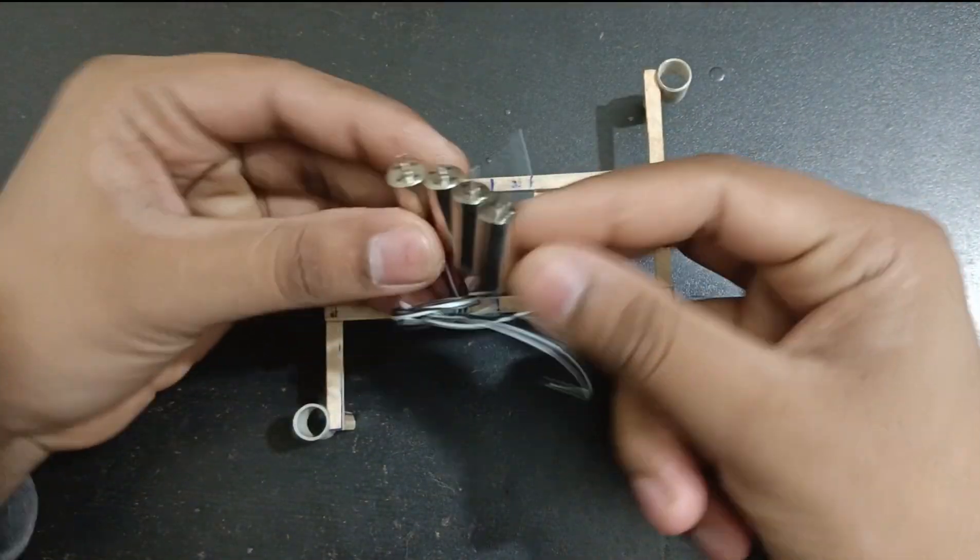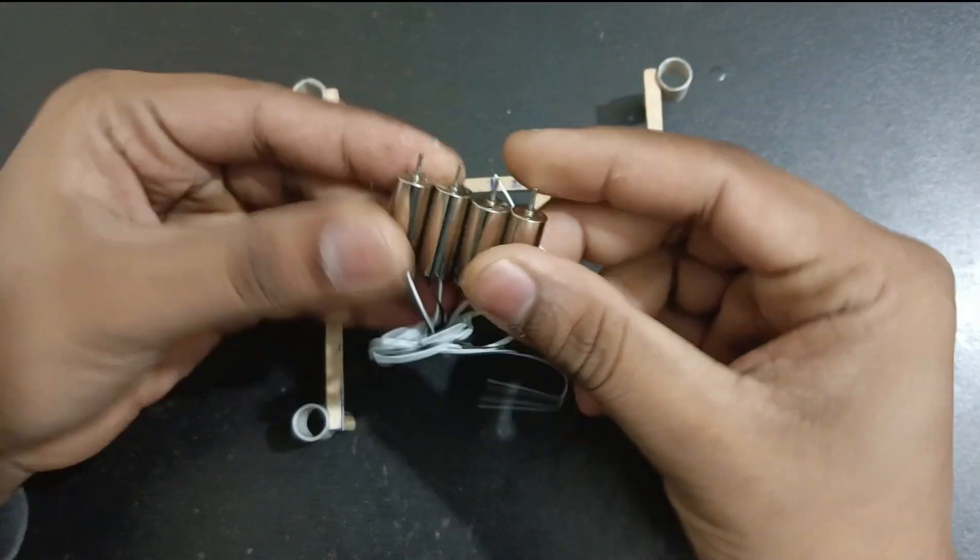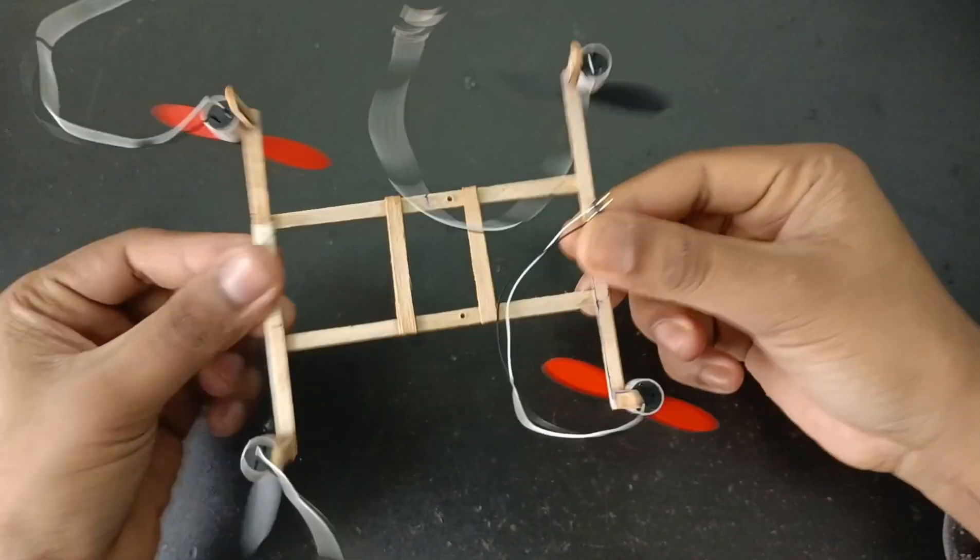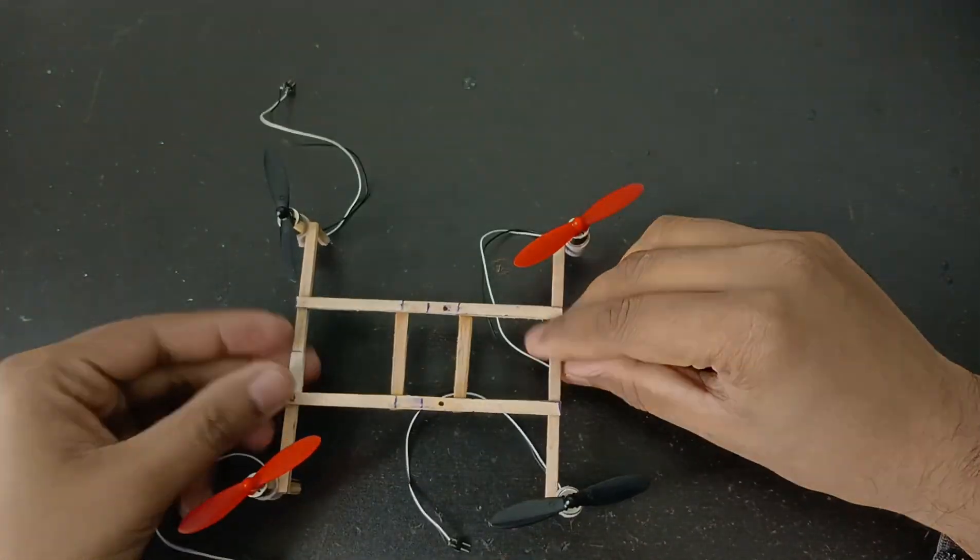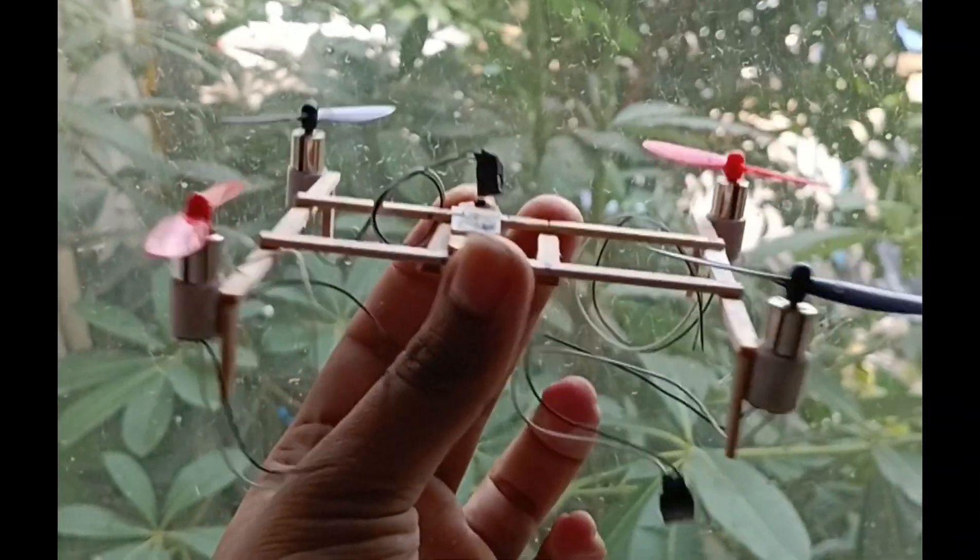Now we will insert the motors. I'm using 8520 model cordless motors and 55mm propellers - two of them are clockwise and two are anti-clockwise.